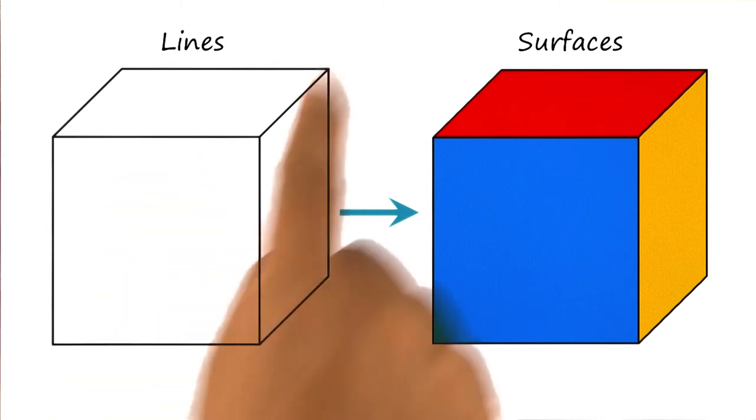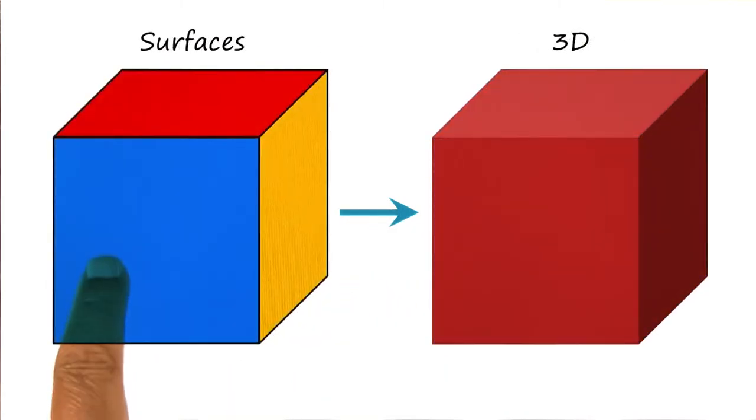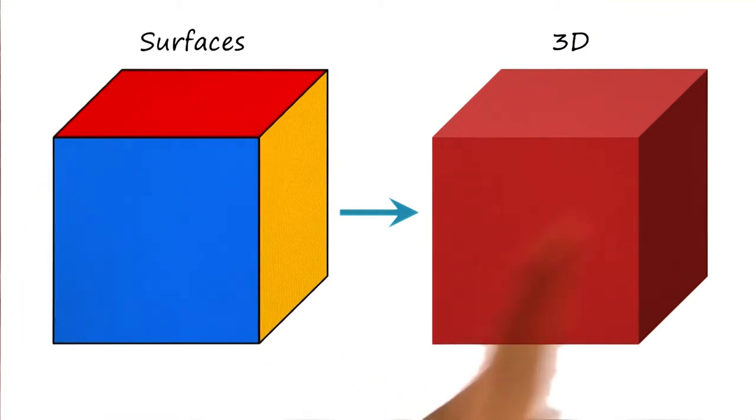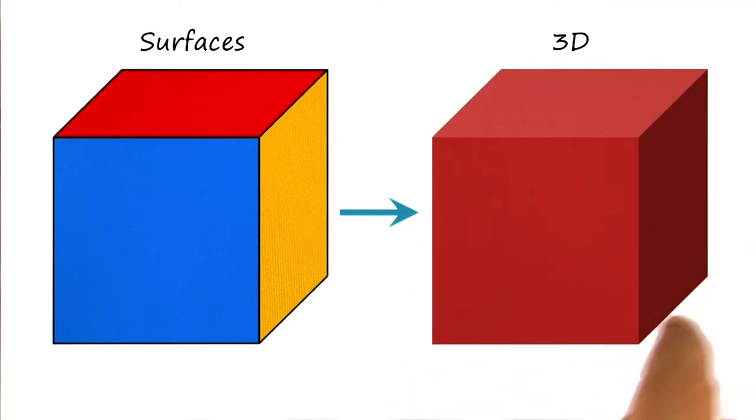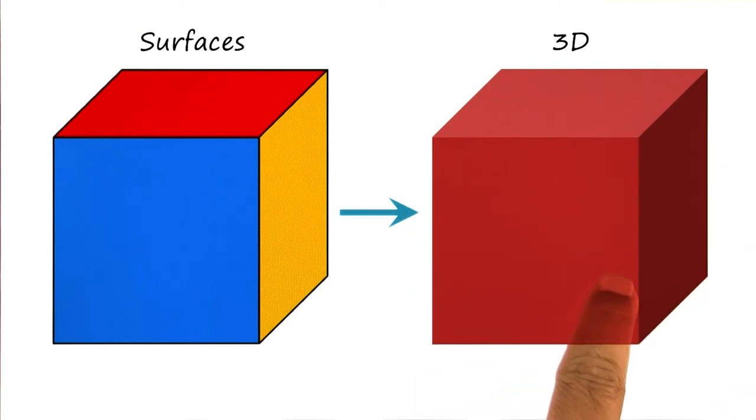And similarly, these four lines and these four lines. In the third and final phase of the object recognition task, according to Maher, surfaces are grouped into a complete 3D object. At this particular point, the visual system recognizes that this is a cube.